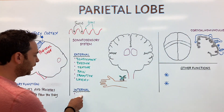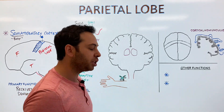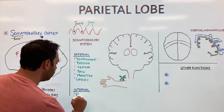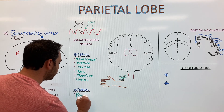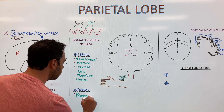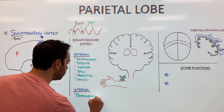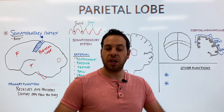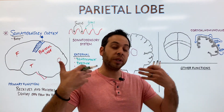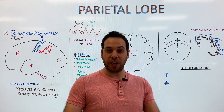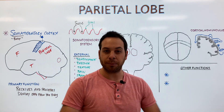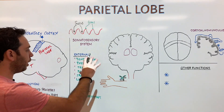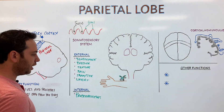Internal receptors are called proprioceptors. These are sensory receptors attached to our muscles, ligaments, and joints that relay information to the parietal lobe — letting us know if we're lifting, punching, moving down, or exercising. So we have both external receptors and internal receptors sending information.